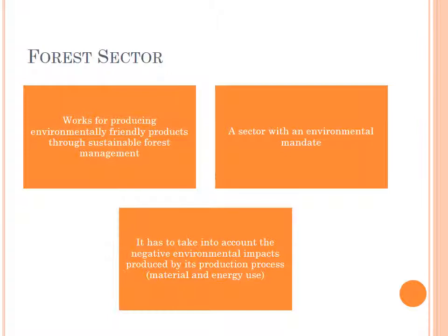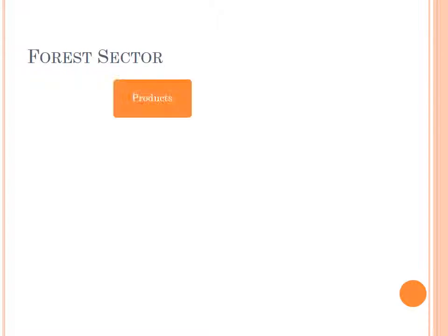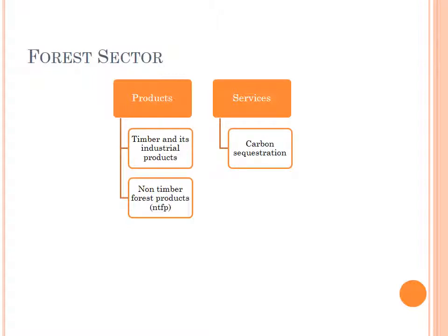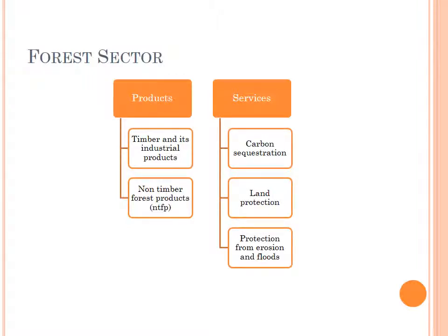It should be accountable for the material and energy use in the process. The products produced by the forest sector are mainly timber and its industrial products, and some non-timber forest products like fruits from forest trees. The services include carbon sequestration, land protection, protection from erosion and floods, and environmental law enforcement produced by forest rangers.